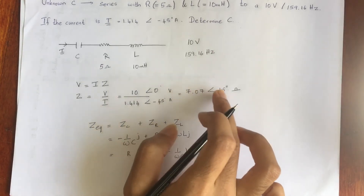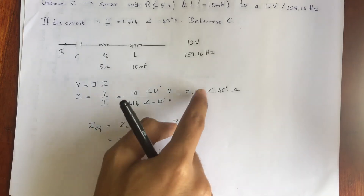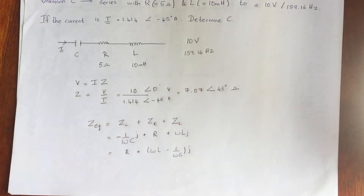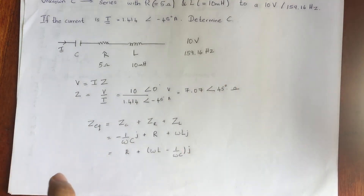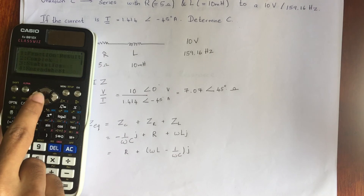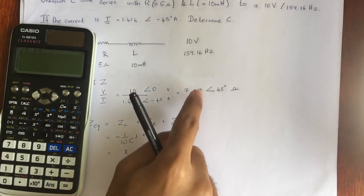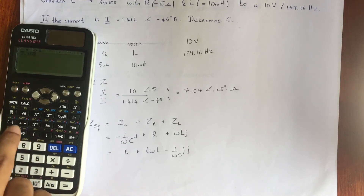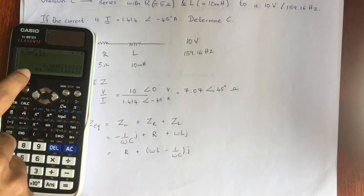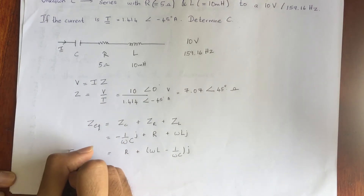Now we need to equate these two expressions. It is easier to convert the polar form 7.07∠45° into Cartesian form. We compute 7.07·cos(45°) and 7.07·sin(45°), which gives approximately 5 + 5j. Using the calculator with 7.07∠45°, I get 4.99, which we take as 5 + 5j.